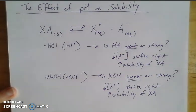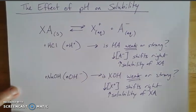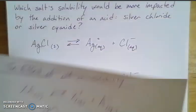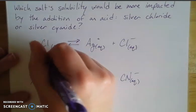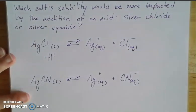Now, if I have this information, this can also help me predict which is going to be more soluble. So I can answer questions that look like this: Which of these salts' solubilities would be more impacted by the addition of an acid? So if I'm adding an acid to these things, then I'm essentially adding hydrogen ions.